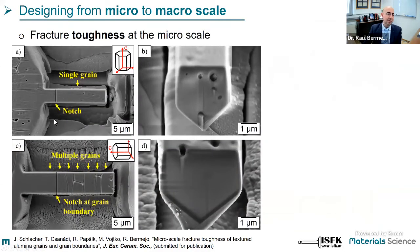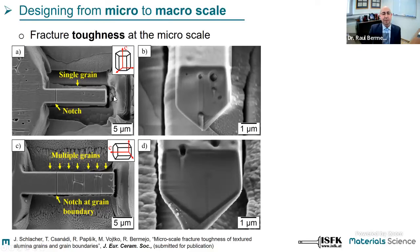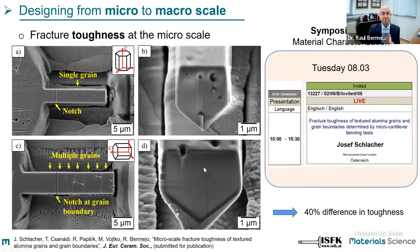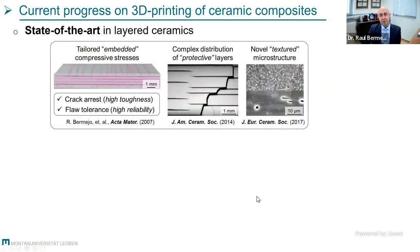You can see on the left hand side two exemplary samples: one is a single grain notched at a certain depth, and then a multi-grain textured alumina where the notch is placed at the grain boundary. We observed there was about a 40 percent difference in toughnesses. I will not tell you which one was tougher — if you want to know the answer please visit the talk from Joseph on Tuesday; he will give you more insights on these results.